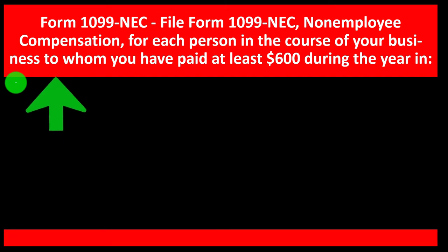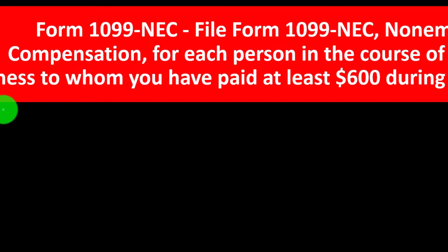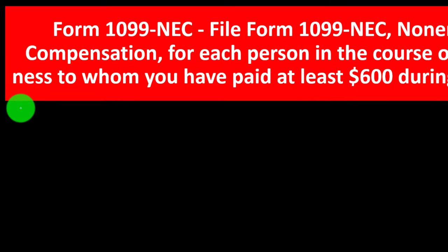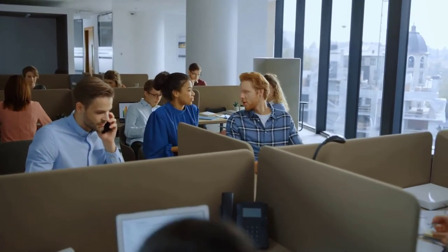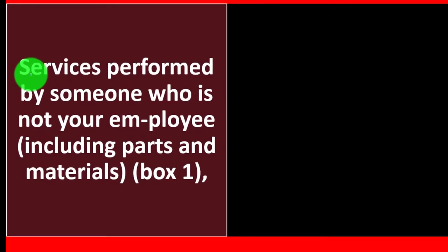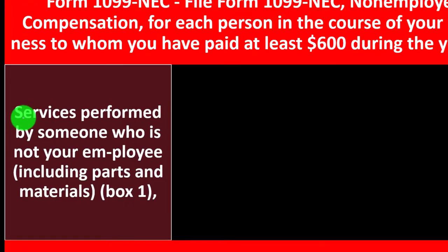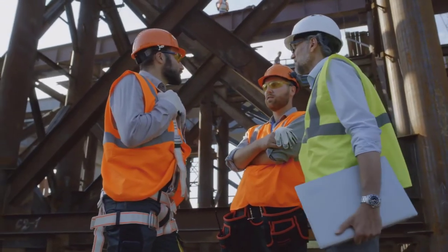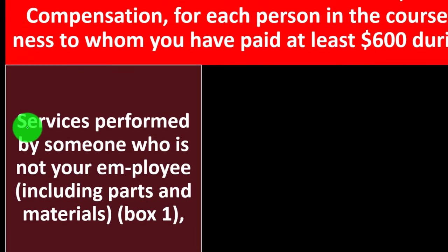We've got the Form 1099 NEC — this is the newer form which has a more restrictive component that used to be reported on the 1099 Miscellaneous. You file Form 1099 NEC, non-employee compensation, for each person in the course of your business to whom you have paid at least $600 during the year in services performed by someone who is not your employee. That means you're thinking about a contractor — that gray area as to whether you want to hire an employee or whether they should be categorized as a contractor. If they're a contractor, not incorporated, and you paid them over $600, you might have to issue them a 1099 NEC rather than a W-2.